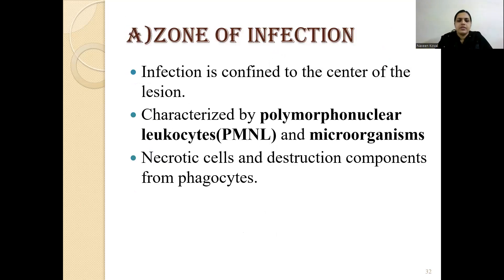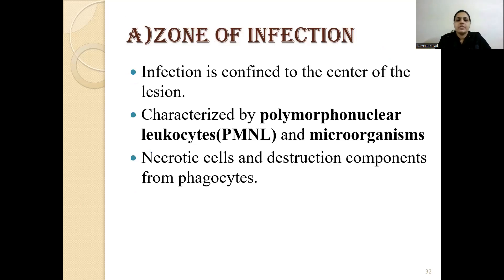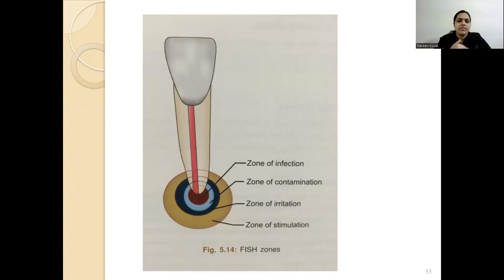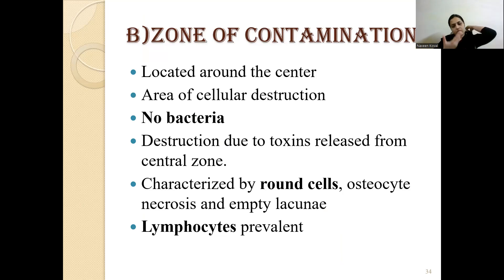The first zone — the zone of infection — is very close to the root canal. Infection is confined to the center of the lesion and is characterized by an abundance of PMNLs and microorganisms, along with necrotic cells and destruction of components from phagocytes. The second zone — the zone of contamination — is located adjacent to the zone of infection. There is cellular destruction but no bacteria present. Destruction is due to toxins released from the central zone. This zone is characterized by round cells, osteocytes, necrosis, empty lacunae, and lymphocytes.